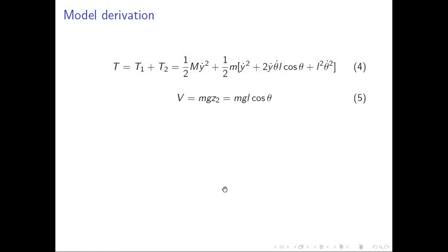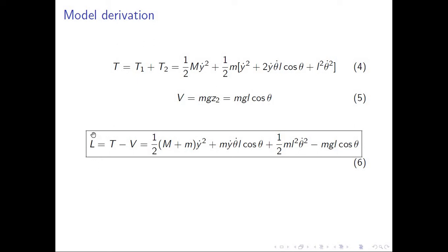Now we need the potential energy. The potential energy V is simply the mass times gravity times the length of the rod times the cosine of theta — the vertical position of the bob. So we have the total kinetic energy and the total potential energy. The Lagrangian is composed of kinetic energy minus potential energy, and after the subtraction we get a not-so-complicated expression.